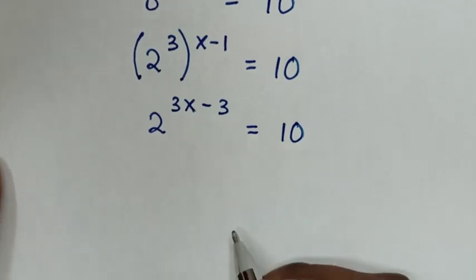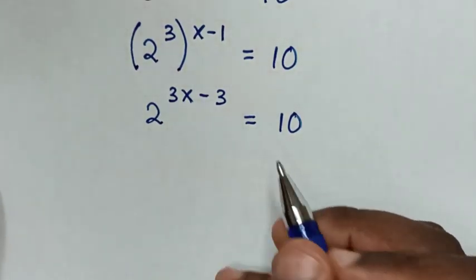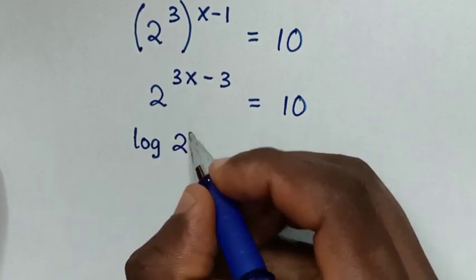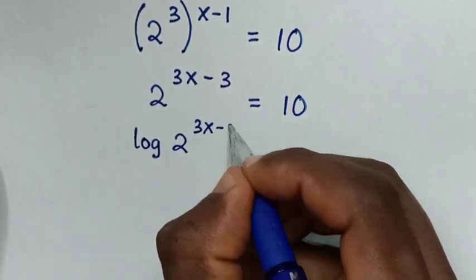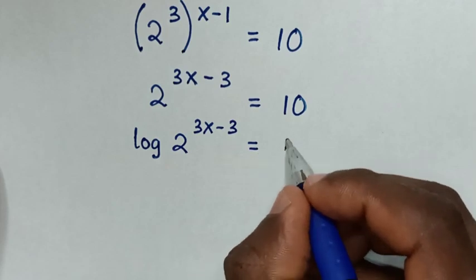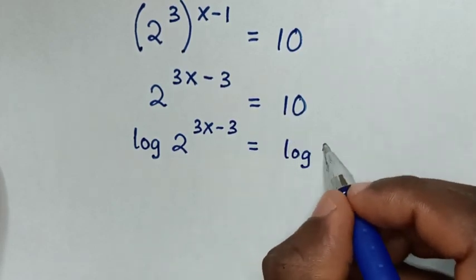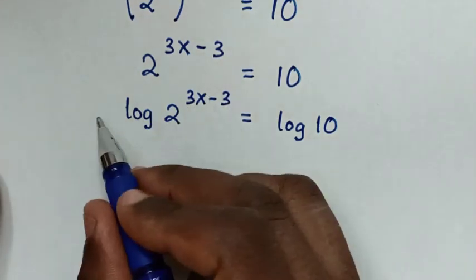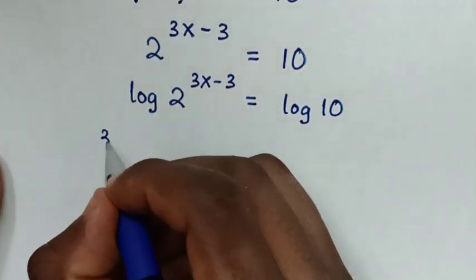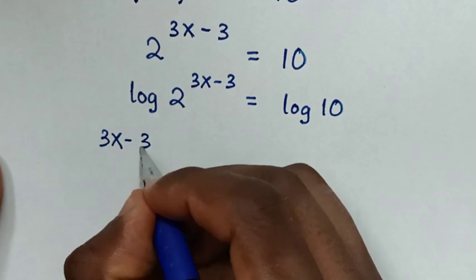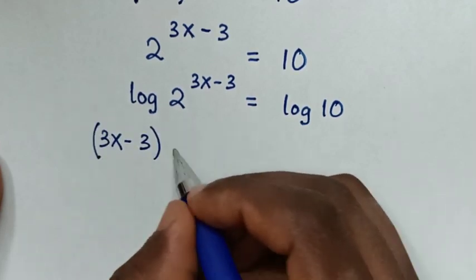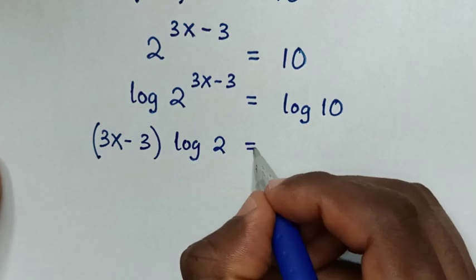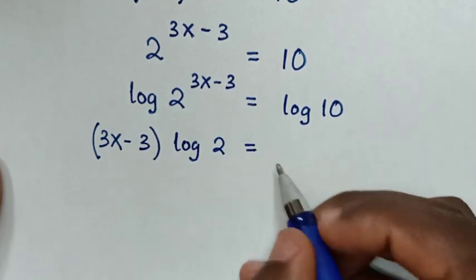In the next step we apply log on both sides. So it will be log of 2 power of 3x minus 3 is equal to log of 10. Then this power will move to the base, so it becomes (3x minus 3) times log of 2, equal to log of 10, which is the same as 1.